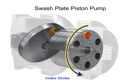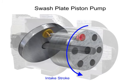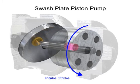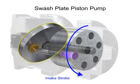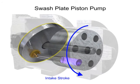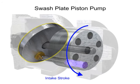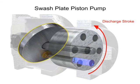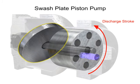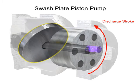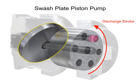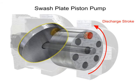On the intake stroke, a spring ensures the pistons pull back and maintain contact with the swash plate, causing fluid to fill the empty cavity left behind. On the discharge stroke, the angle of the swash plate forces the pistons back inside the piston block and discharges the fluid. The greater the slant on the swash plate, the further the pump pistons move and the more fluid they transfer.